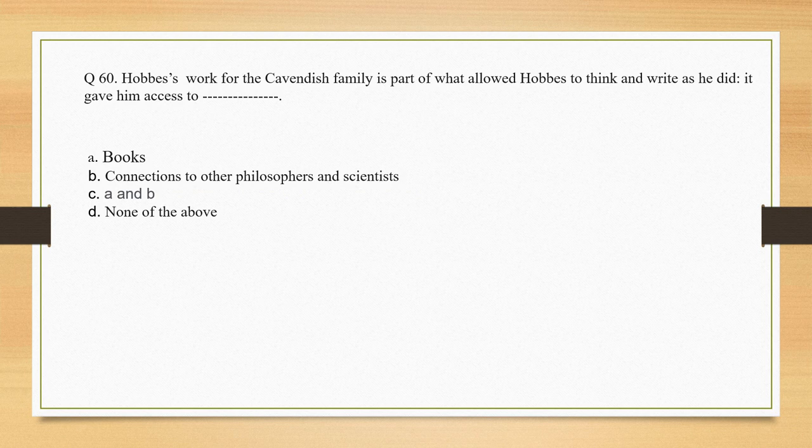Hobbes' work for the Cavendish family is part of what allowed him to think and write as he did — it gave him access to books and connections to other philosophers and scientists. That's why the correct option is option C: A and B.